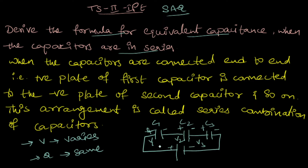The charge is not distributed. The charge on C1 is given to C2, and from C2 it is given to C3. The potential differences are V1, V2, and V3.